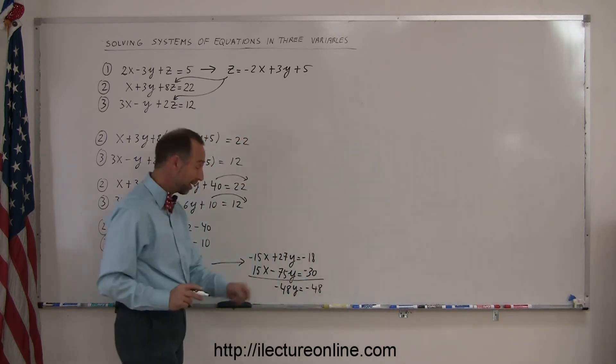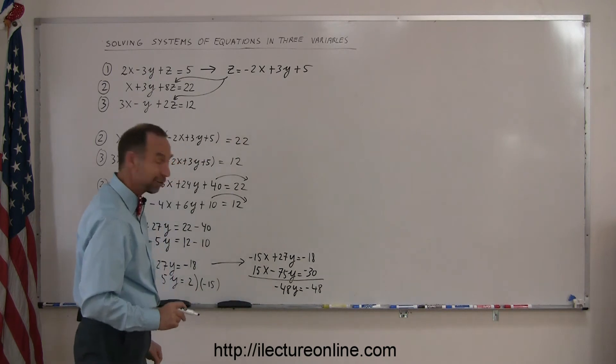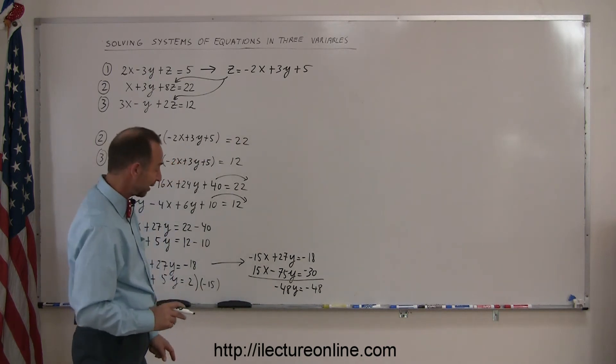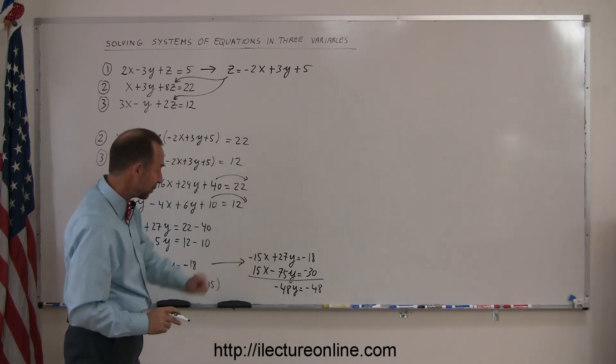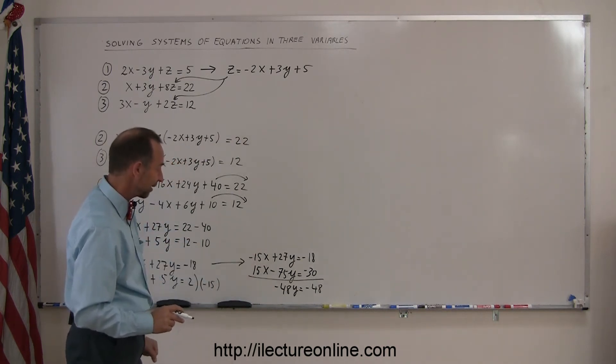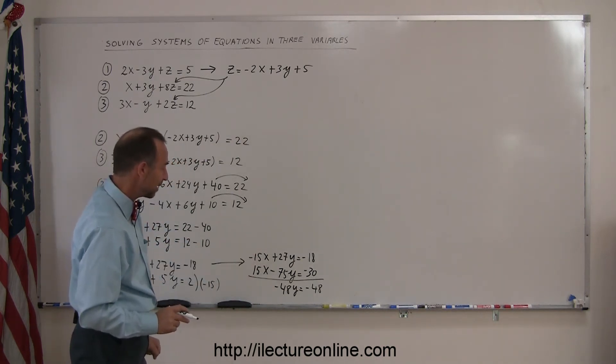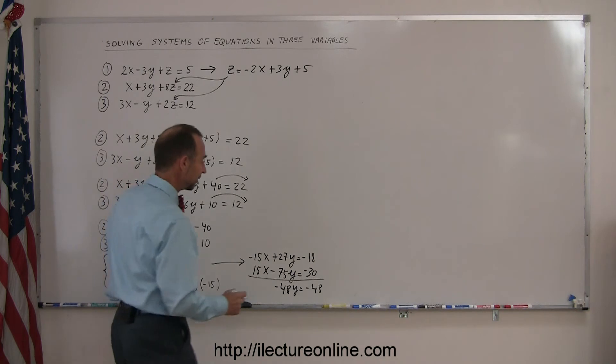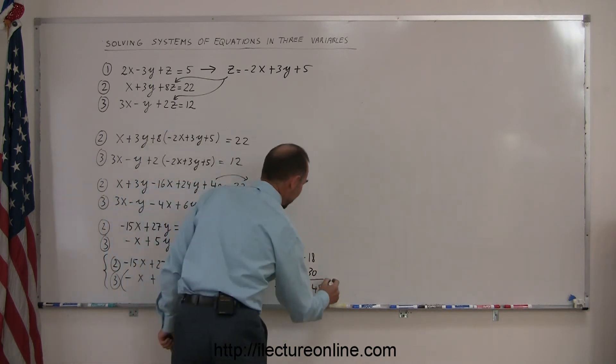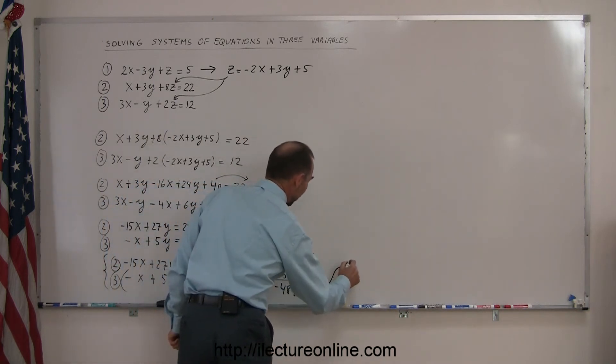Dividing both sides by negative 48 gives me y equals 1. That gives me some comfort that I did it correctly.